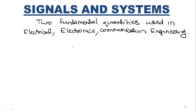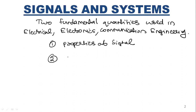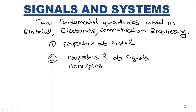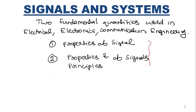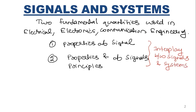In the first module we study the properties of signals — what a signal is and what its properties are. We also study the principles of signals and how they interplay between them: how a signal affects a system and what a system does to a signal. Signals and systems are two fundamental quantities used in almost all engineering fields, including electrical, electronics, and communication engineering.